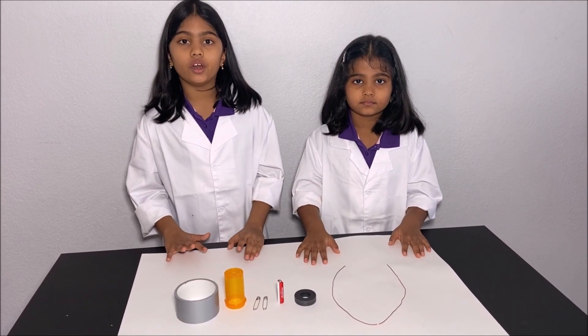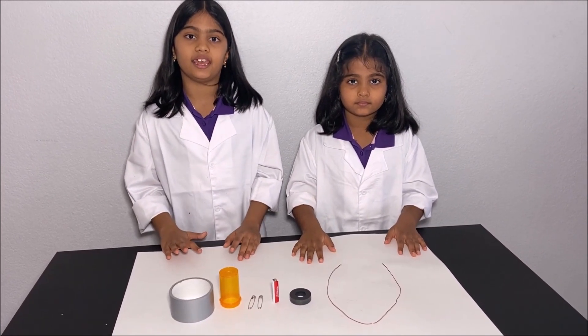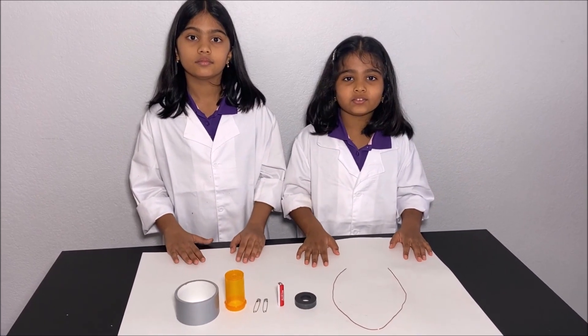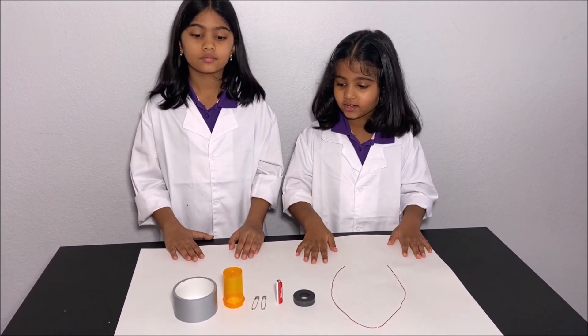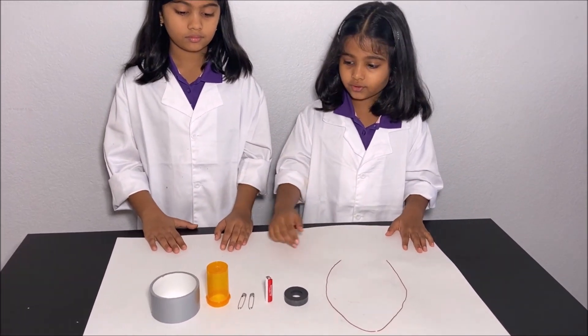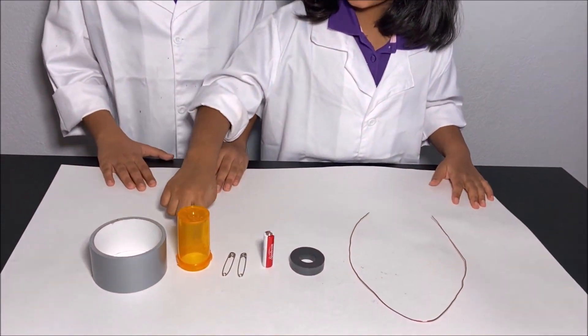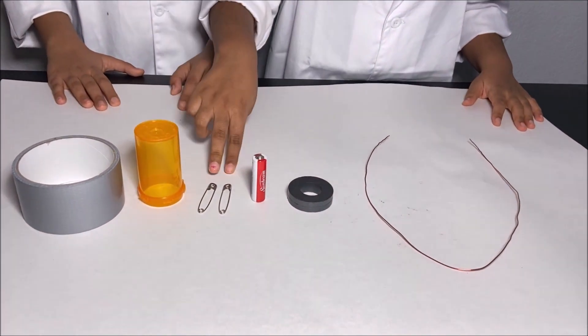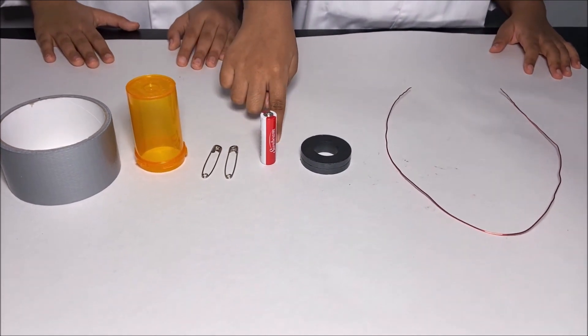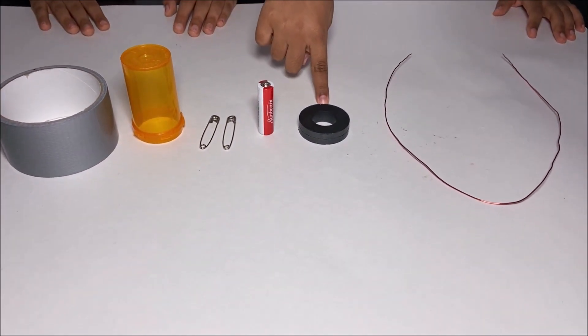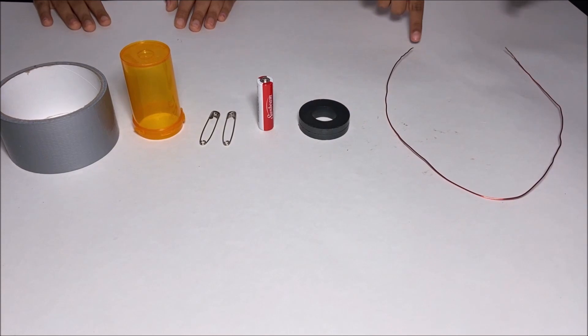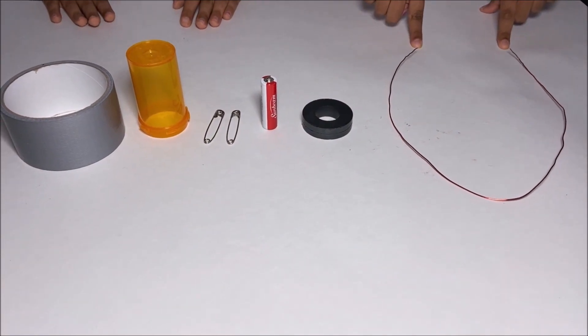Now we know what a DC motor is, now we're going to make one. To make a DC motor we are using duct tape, a cylindrical object, two safety pins, a battery, a permanent magnet, and a copper wire.